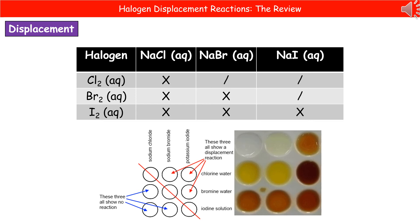What they could ask you to do in the exam is to predict what you'd see. All we need to do is apply our knowledge that the more reactive halogen will take the place of the less reactive one. So if we've got chlorine reacting with anything beneath it in the group, we will see a reaction and a colour change — as shown with the ticks on sodium bromide and sodium iodide. Bromine will only react with sodium iodide because chloride is more reactive than it, so it can't take bromine's place. And because iodine is the least reactive of our three, we see no reaction with any of those chemicals.